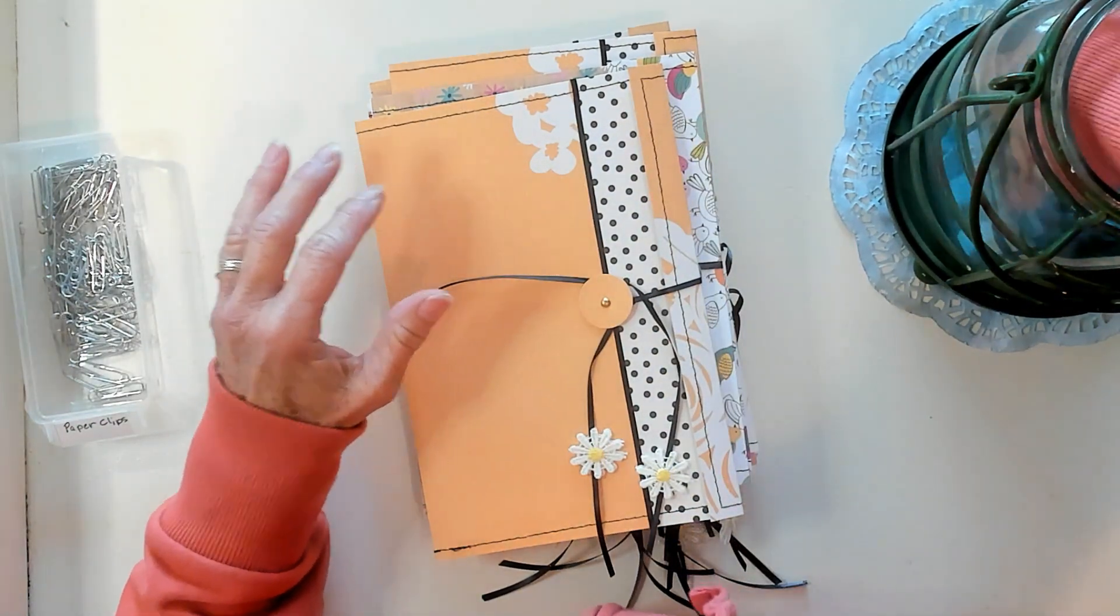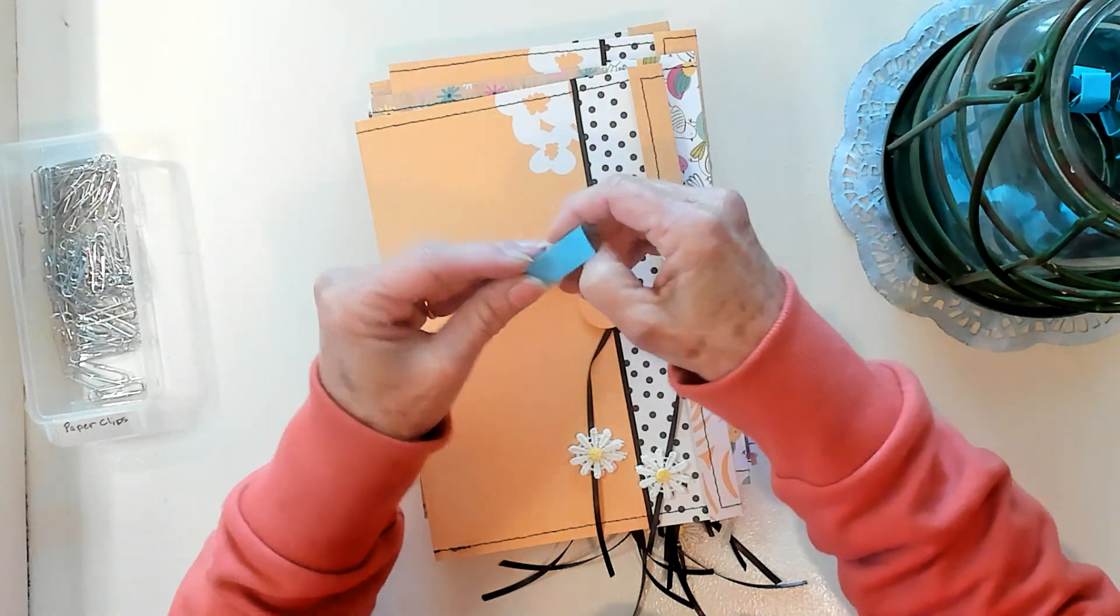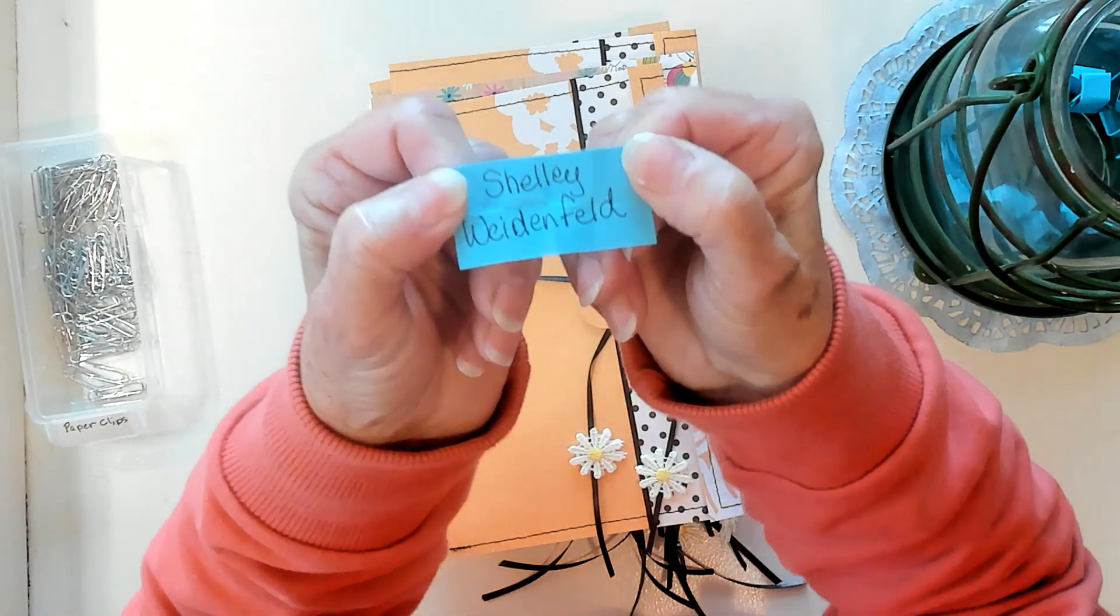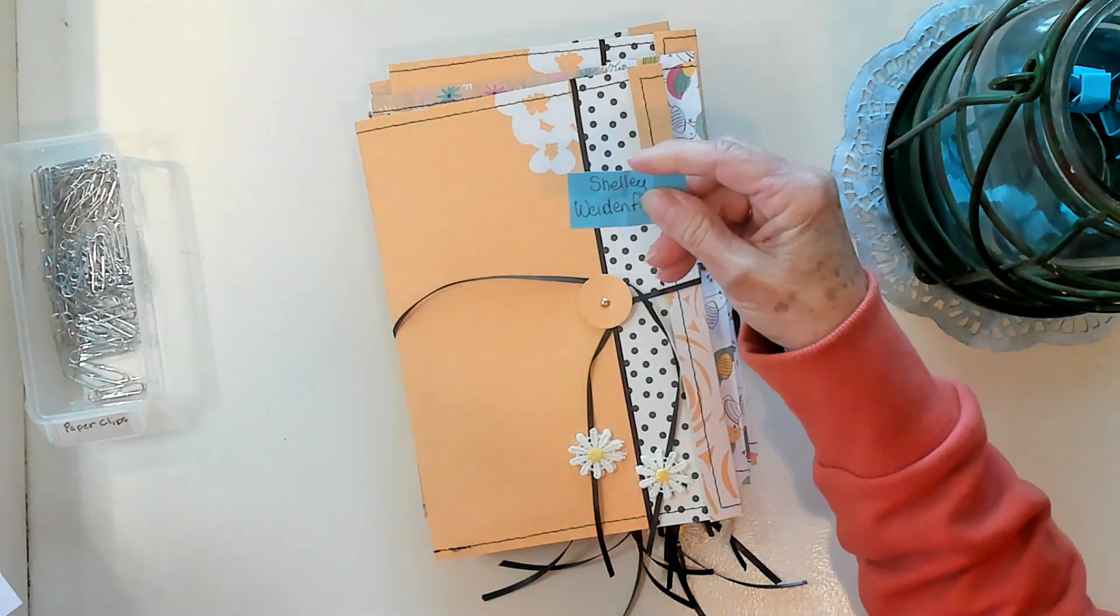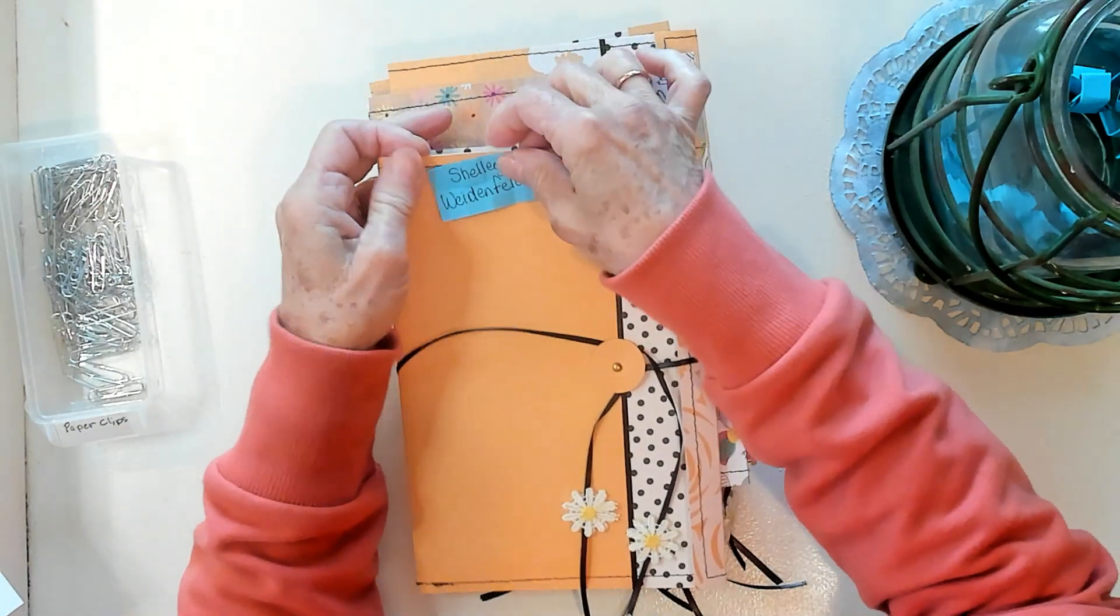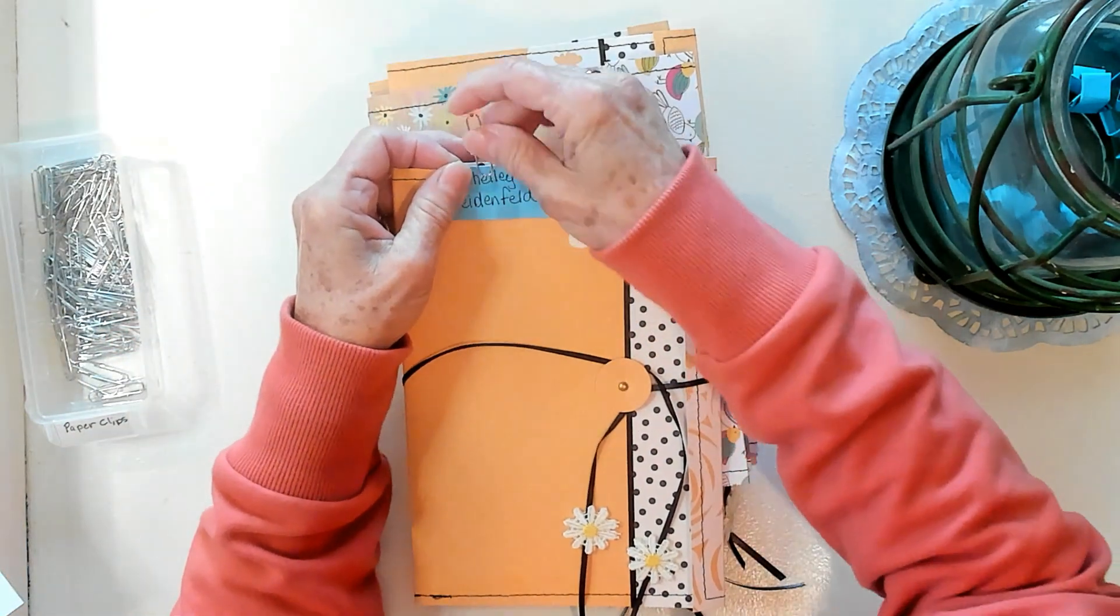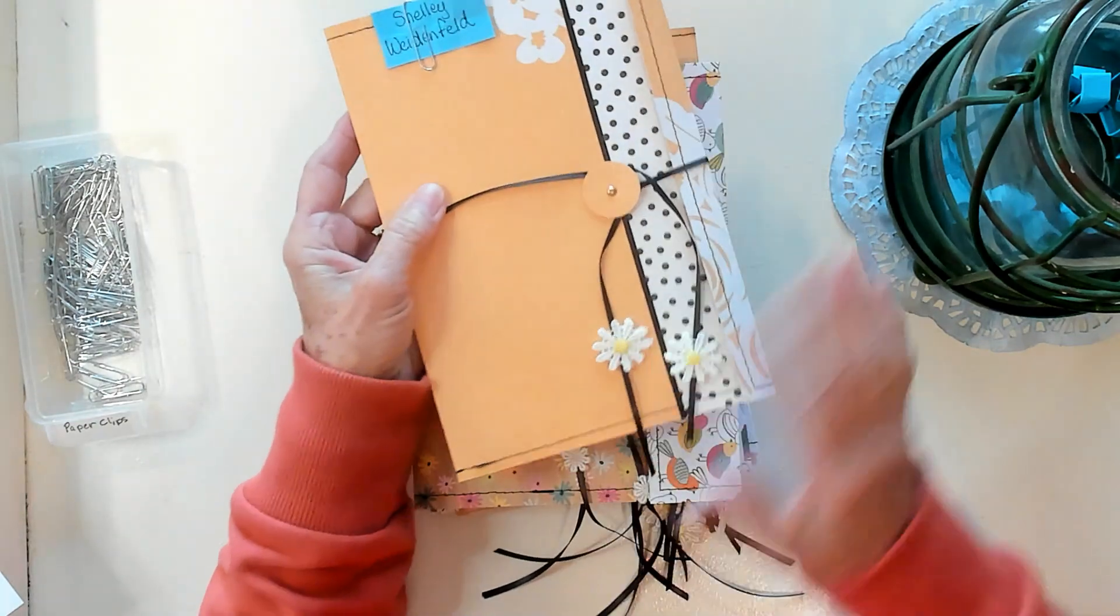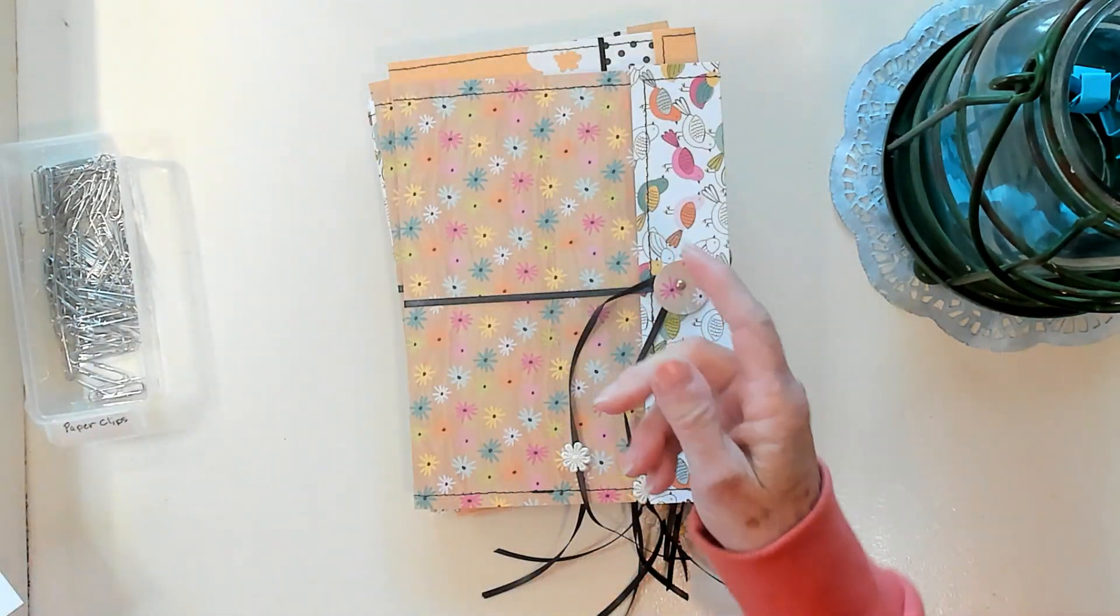First winner is Shelly Winfield. Shelly, you're our first winner. And Shelly, I'm thinking I might have your address, but I'm thinking we exchanged some tags in our Happy Mail tag swap. Anyway, you're the first winner. This yellow one is yours. I'm going to set it aside.